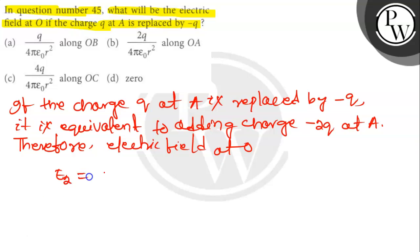E2 equals 2Q divided by 4 pi epsilon 0 R square along OA.